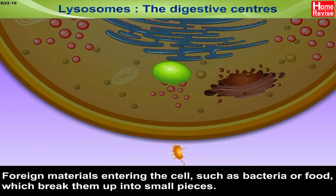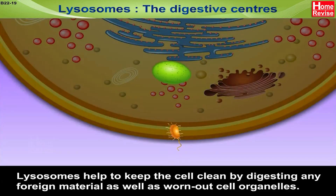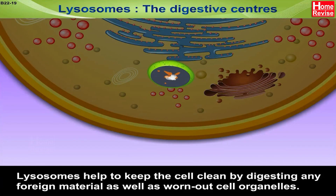For example, the foreign materials entering the cell, such as bacteria or food — these lysosomes break them up into small pieces. Lysosomes help to keep the cell clean by digesting any foreign material as well as worn-out cell organelles.